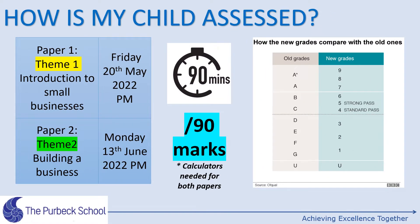The GCSE has two papers that students have to take. They are 90 minutes long in duration and are out of a total of 90 marks per paper. The papers are highly rigorous and require a high level of speed and accuracy throughout. Paper 1 focuses on year 10 content — introduction to small businesses — and Paper 2 focuses on year 11 content, where we looked at growing a business.